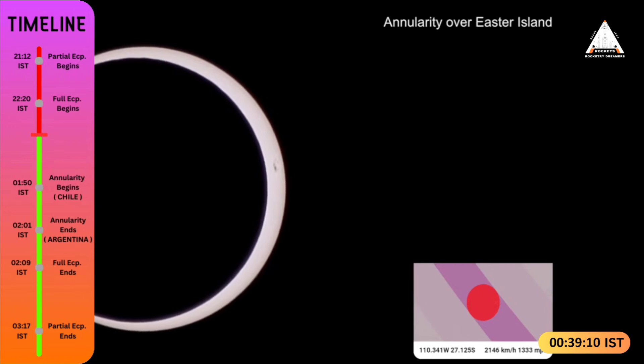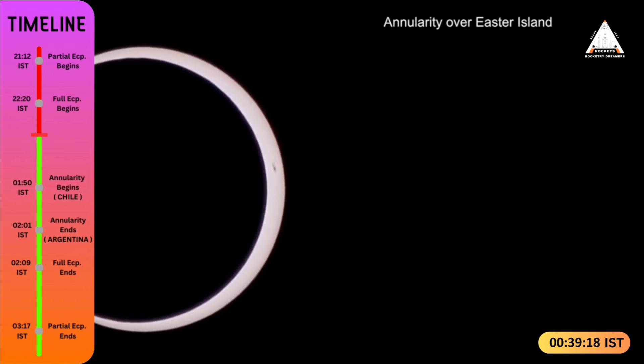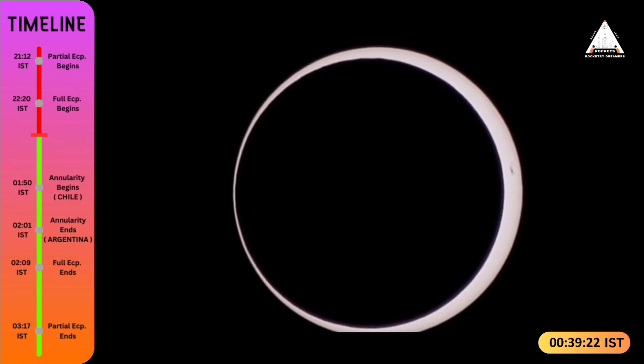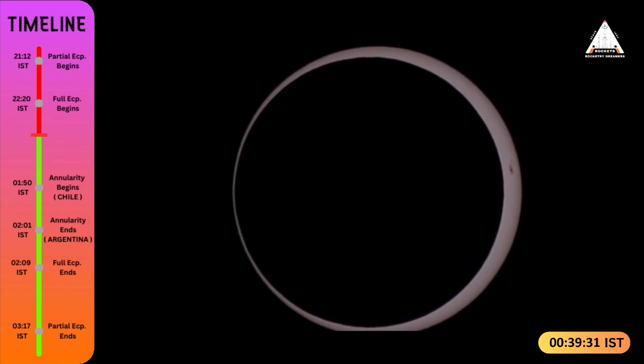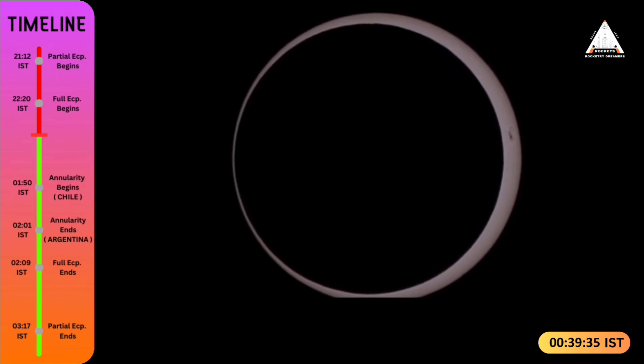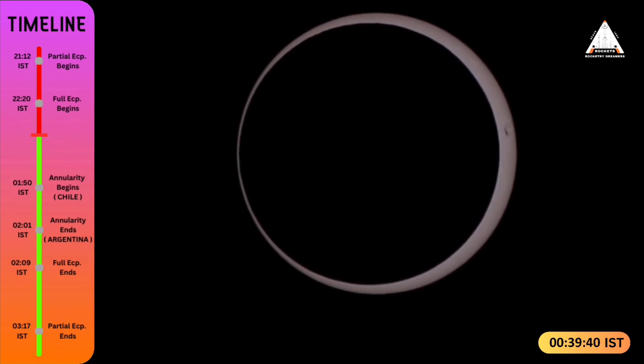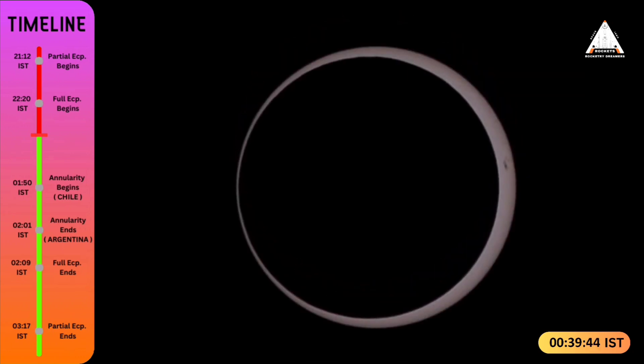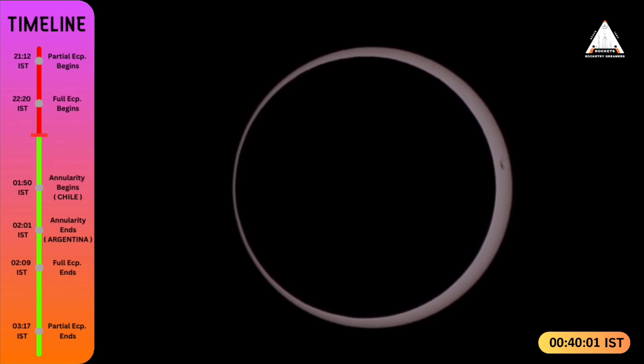Annularity at Easter Island has already started. The ring of fire is visible now, currently happening over Easter Island in the Pacific. We will be moving to Chile to see another annularity and then to Argentina, where this is the last location from where this annularity and eclipse is available.